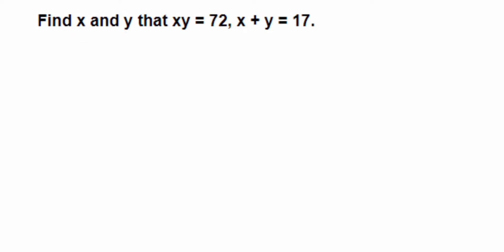We cannot simply substitute x = 17 minus y, because either way we won't get the answer easily. So what we're going to do is use our algebraic identities to get the values of x and y.